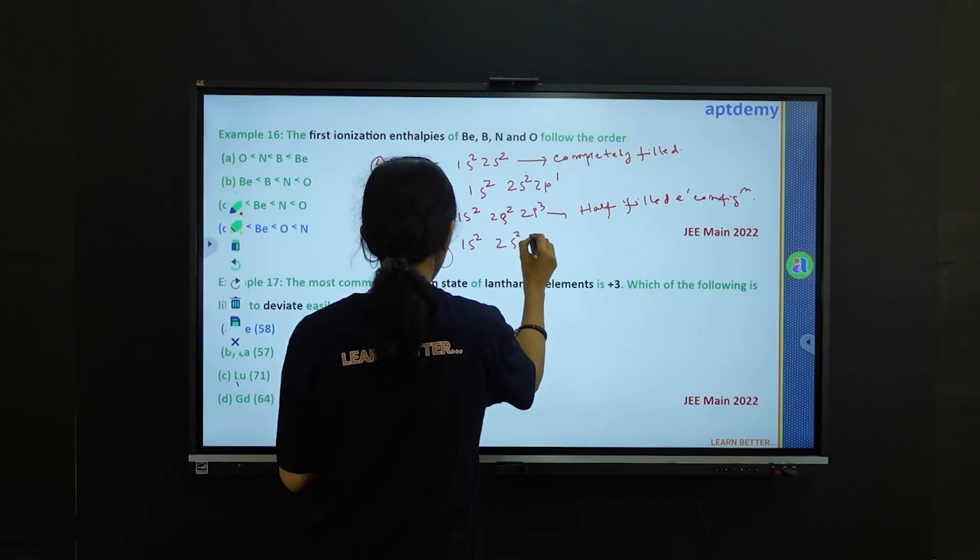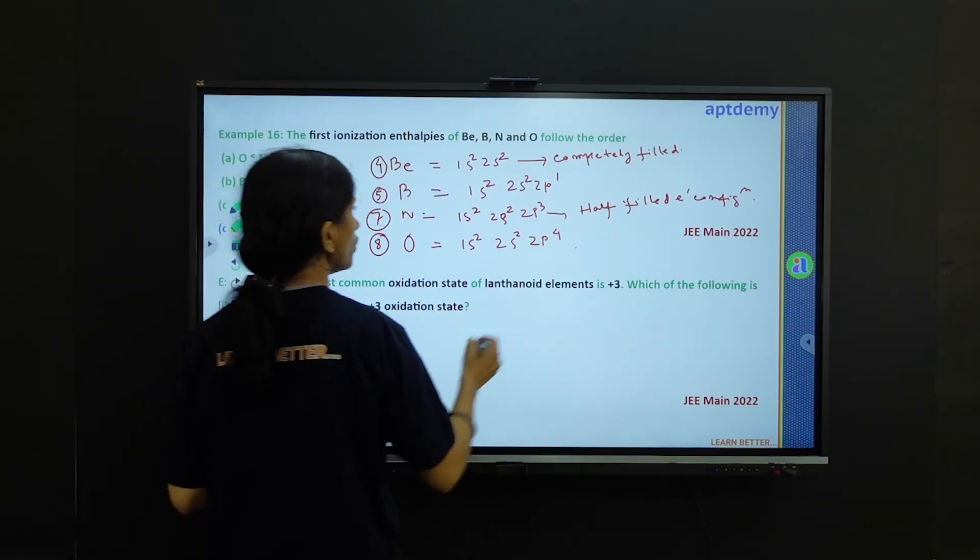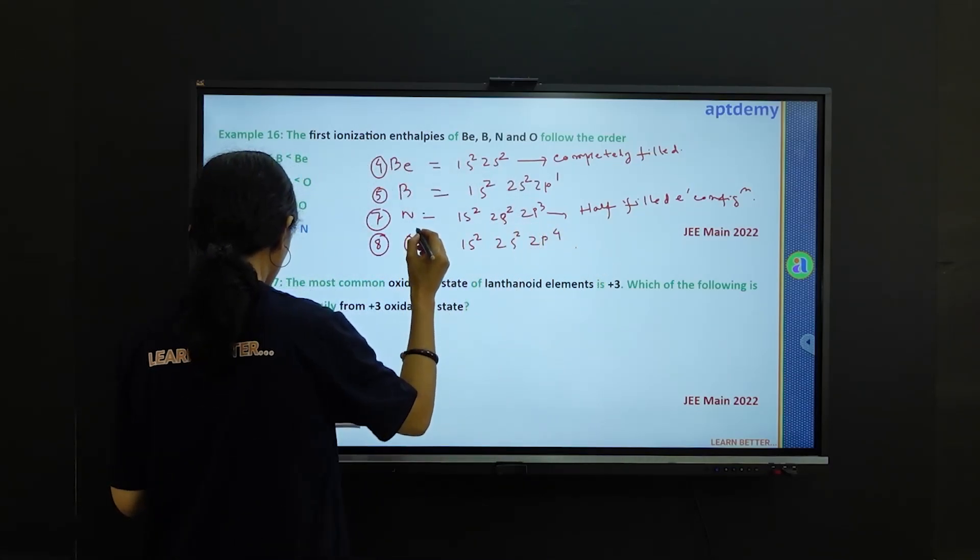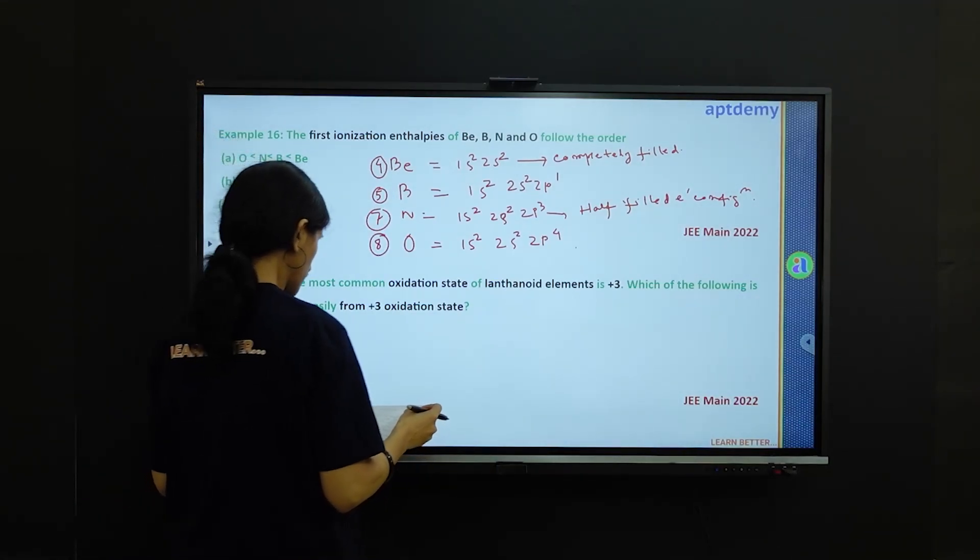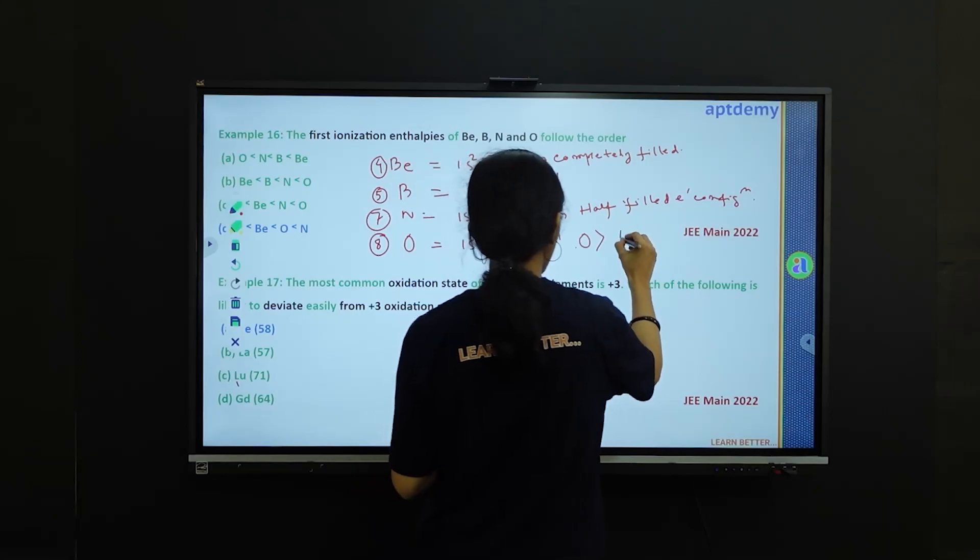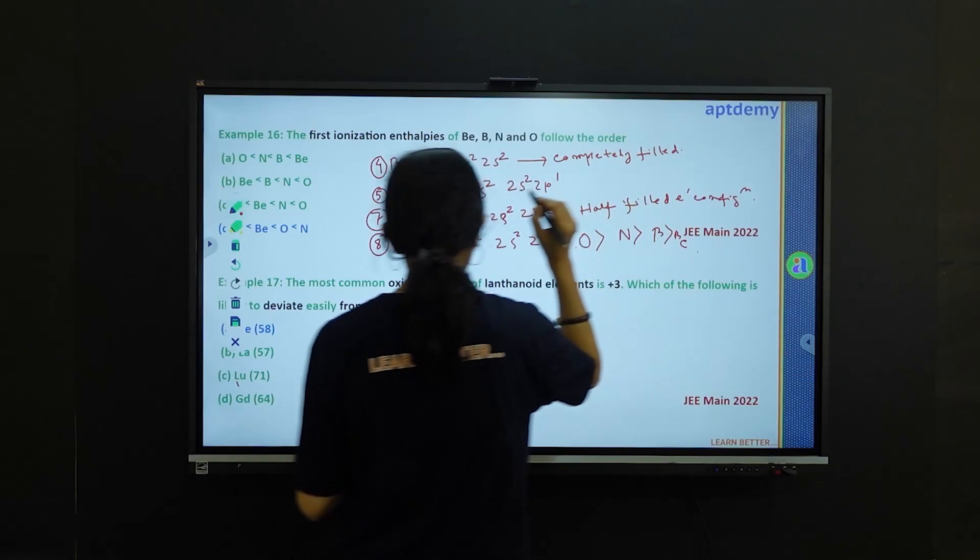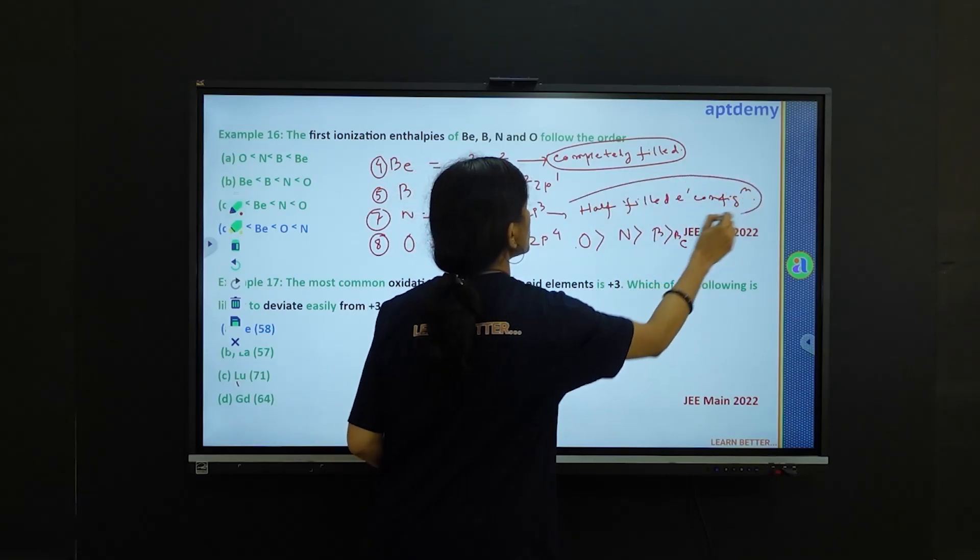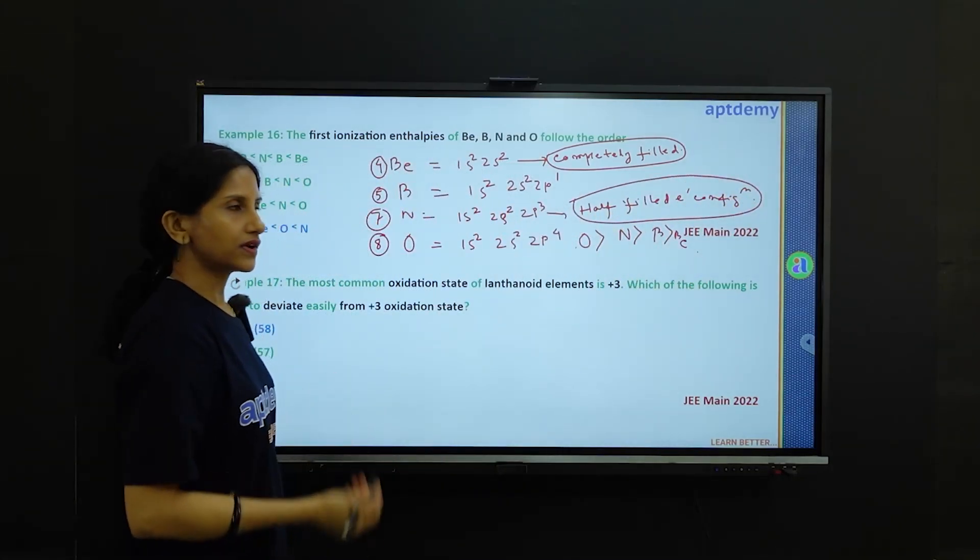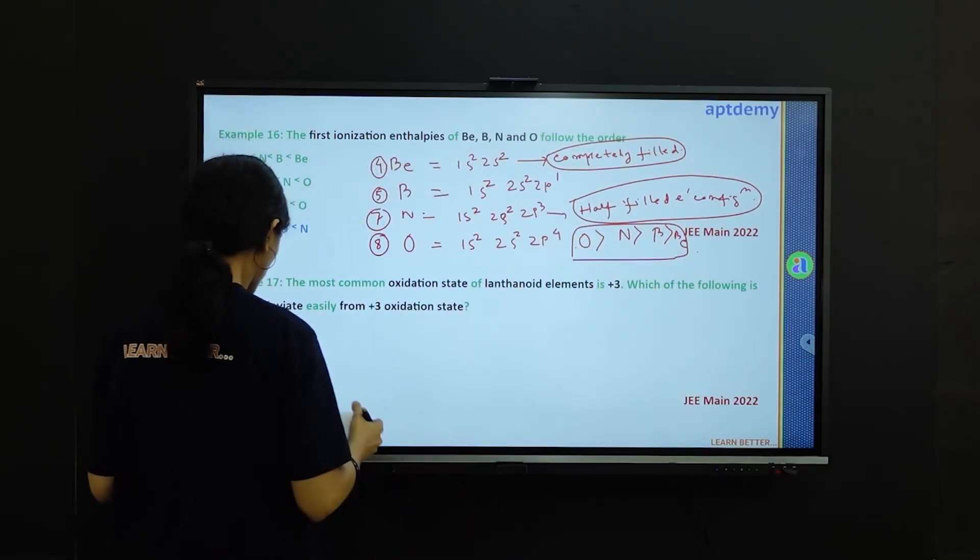The ionization energy increases on moving from left to right in a period due to increase of z effective or effective nuclear charge. So order would be oxygen is greater than nitrogen is greater than beryllium is greater than boron, but there is greater stability for completely filled electronic configuration as well as half filled electronic configuration. So this would not be the proper trend.